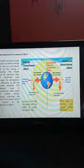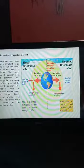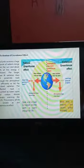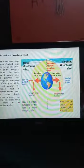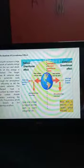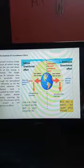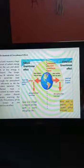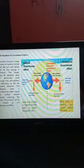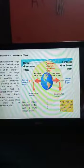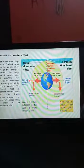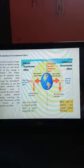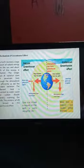Mechanism of greenhouse effect. The Earth receives a large amount of radiant energy from the Sun, and about 30% of this energy is reflected. The longer wave infrared radiation does not penetrate back through the atmosphere as efficiently as did the incident radiation. The reflected heat is absorbed by water vapor and carbon dioxide, thereby warming the Earth. This process, which is known as the greenhouse effect, shows the figures - natural greenhouse effect and enhanced greenhouse effect.